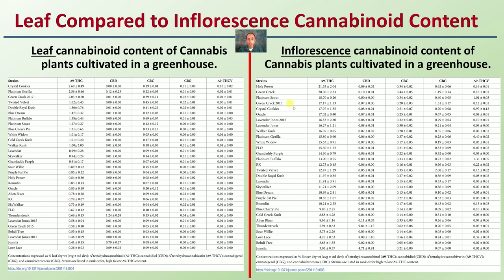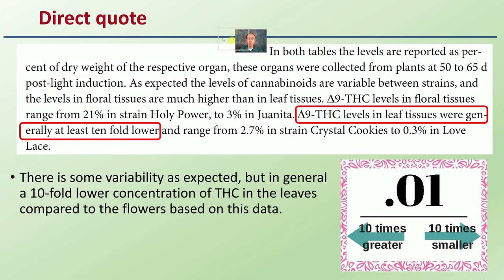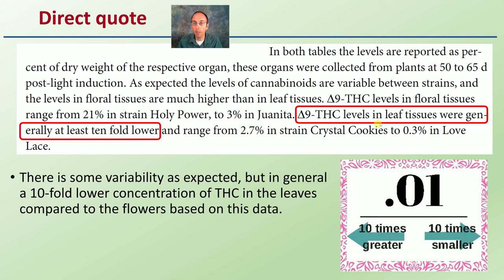These are the same varieties mixed up here because they're ordered based on delta-9 THC levels. A direct quote from this more updated article: delta-9 THC levels in leaf tissues were generally at least tenfold lower compared to that of the actual inflorescence. There's some variability as expected, but in general, tenfold lower THC concentration in the leaves compared to the flowers.